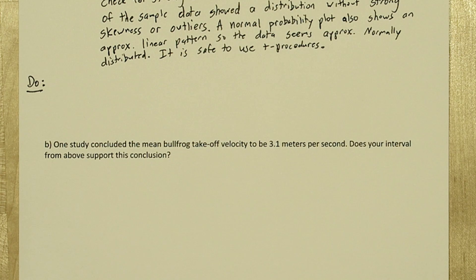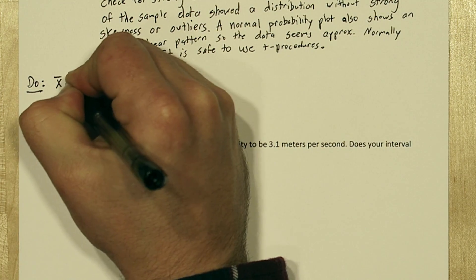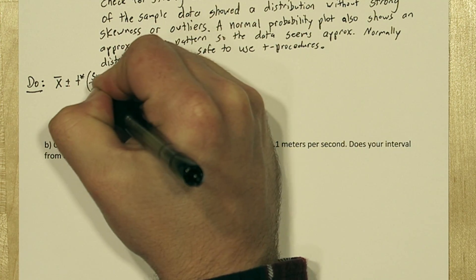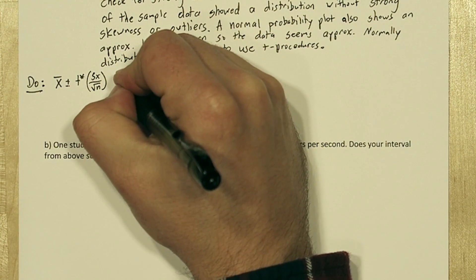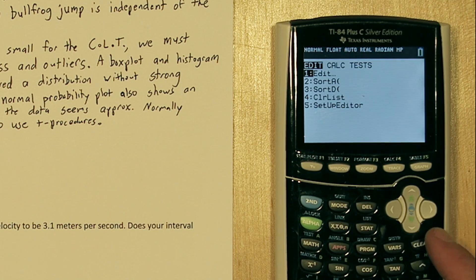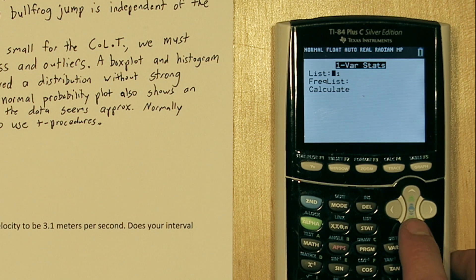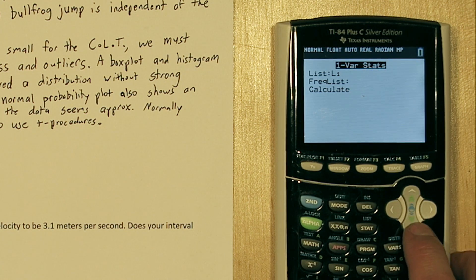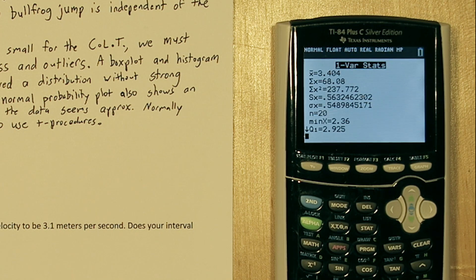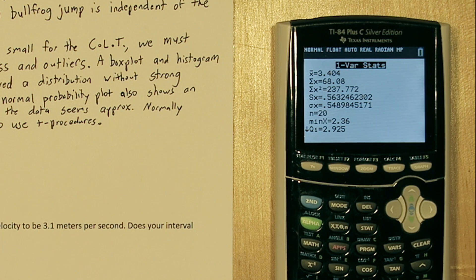Now we're ready to actually construct our confidence interval. Our confidence interval is going to be a point estimate plus or minus a margin of error. In this case, x bar plus or minus t star times s sub x over the square root of n. To find out what some of these values are, press the stat button and go over to calculate, press enter for 1 var stats, and we're going to run them on list 1. You can leave the frequency list blank. When you press enter, here's x bar and also s sub x. Let's copy those values down.